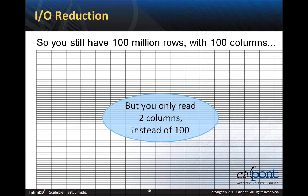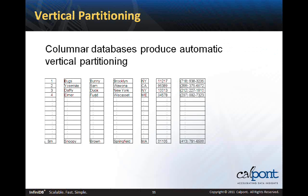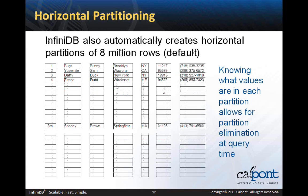Now let's go back to the table with 100 million rows and 100 columns. You still have 100 million rows, but you only have to read two columns, not 100, to find the average age of your male customers. We can see how columnar databases produce automatic vertical partitioning by allowing you to read only the columns you need. InfiniDB also automatically provides horizontal partitioning by storing 8 million rows by default in an extent, and creating an extent map which shows the maximum and minimum values of the column in each extent. InfiniDB reads this extent map and can avoid reading any extent that doesn't contain the values you're searching for. So if you have a column commonly used in filters, it can hugely improve performance if your data is sorted by that column, minimizing the number of extents that contain the values you're searching for.